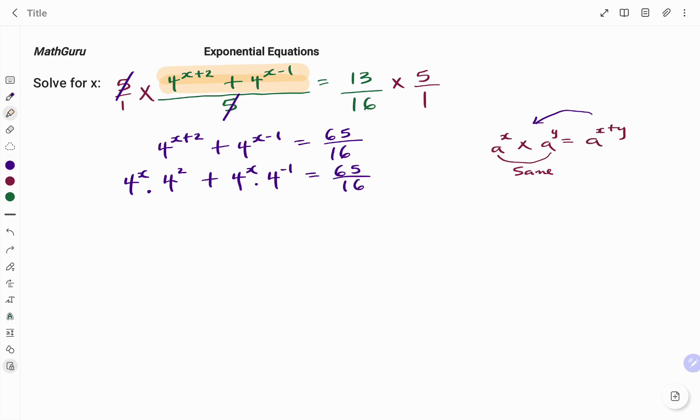So, now that I've been able to break up the terms on the left, I can see that I have a common factor of 4 to the power of x. So, taking out the common factor, I have 4 to the power of x in bracket, I'm left with 4 squared on my left and on my right, 4 to the power of negative 1, that's a negative exponent.